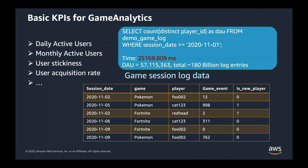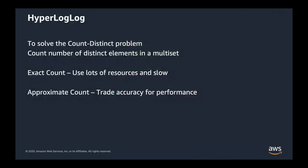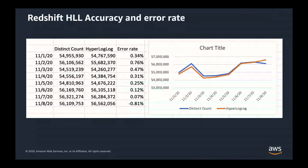Luckily, exact distinct player count is not necessary here. We could do approximate count, which can be 2.5 times faster. The function used here is called HyperLogLog. HyperLogLog is a novel algorithm that efficiently estimates the approximate number of distinct values in a data set. It trades accuracy for performance, but don't be scared by the error rate — let me show you what accuracy you can get from HyperLogLog.